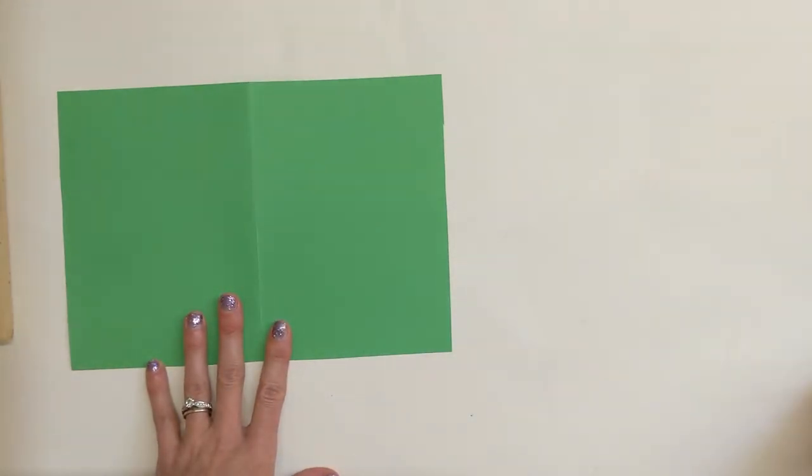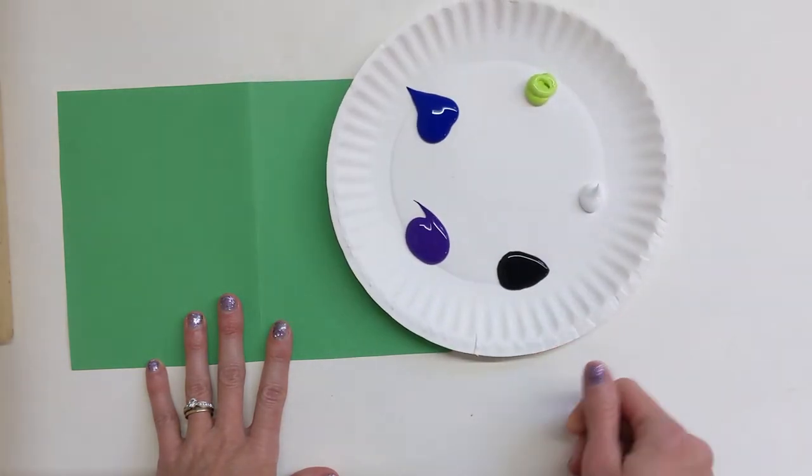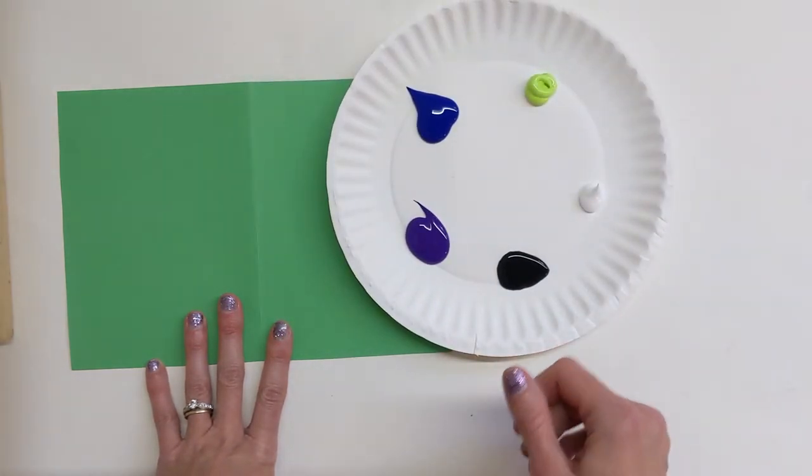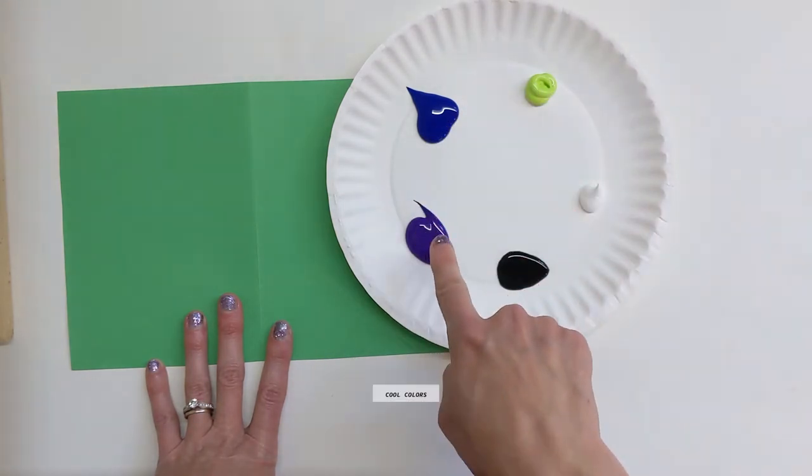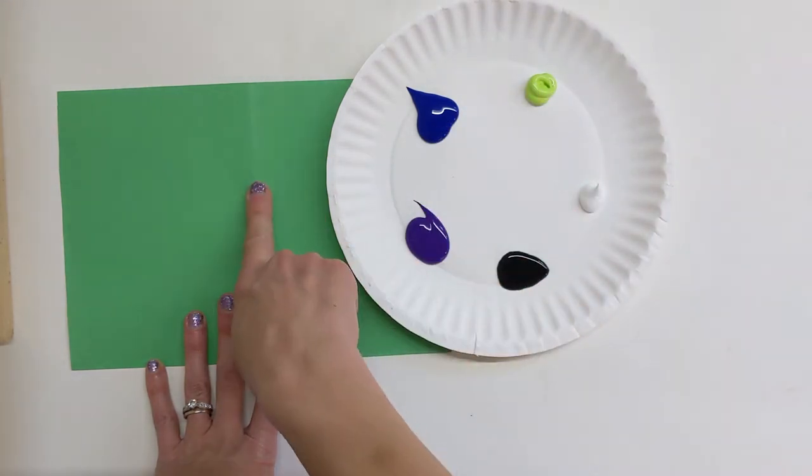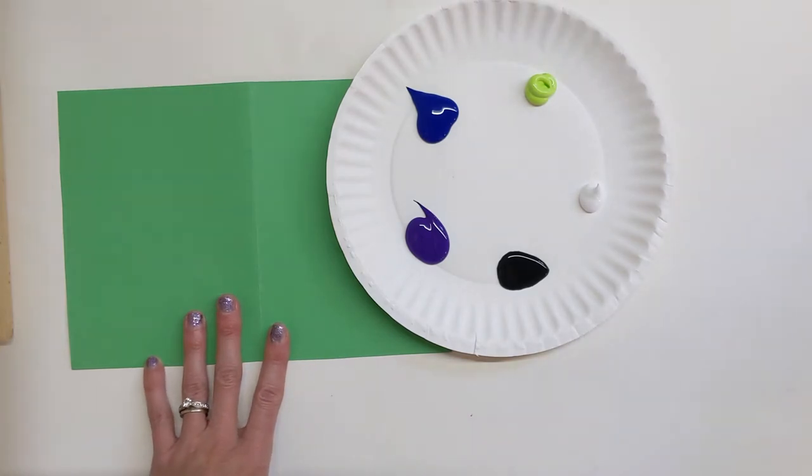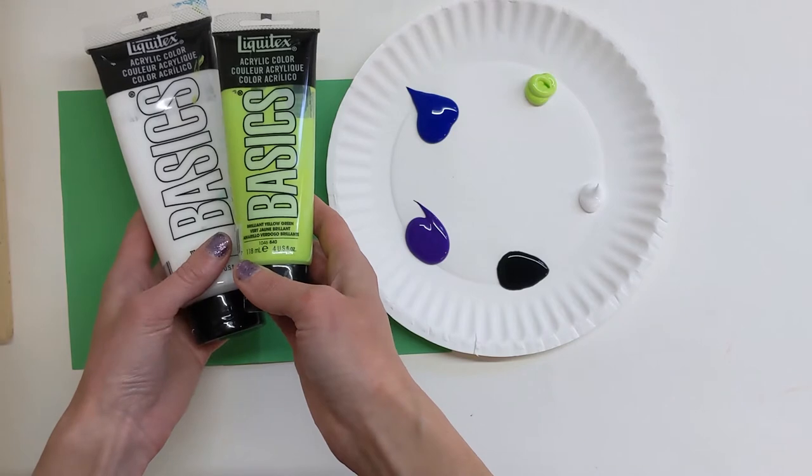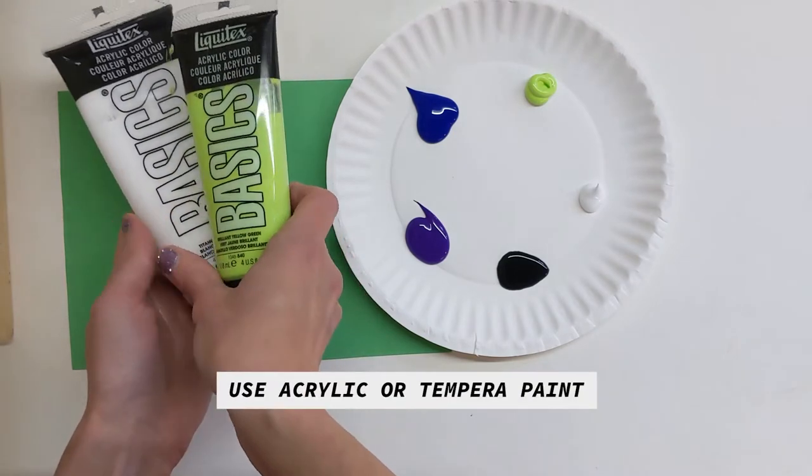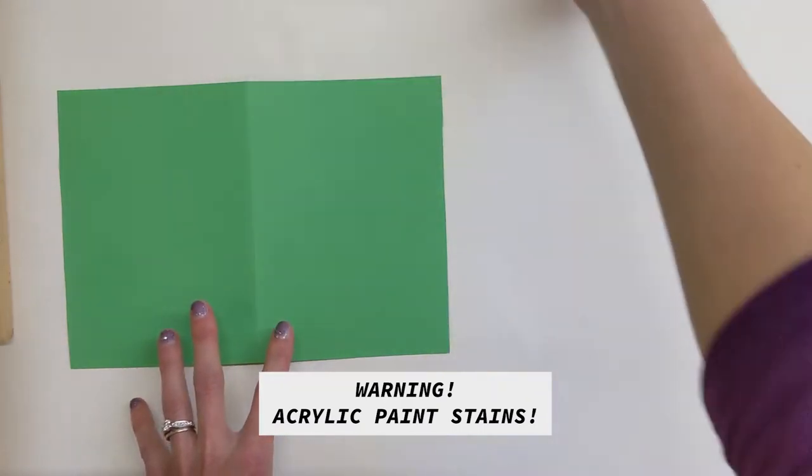So here are some things that I'm going to need today. I'm going to need some paint. I decided to use cool colors. Cool colors are blue, green, and purple. They sit next to each other on the color wheel and I think those will look really good with my green piece of paper. And I also have some neutral colors like black and white. The paint that I'm using is acrylic paint, but you don't have to use acrylic paint. You could also use tempera paint. I just would not try to use watercolor paint. That's not going to be thick enough for this.